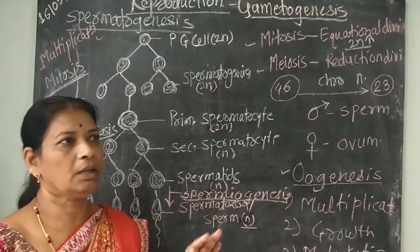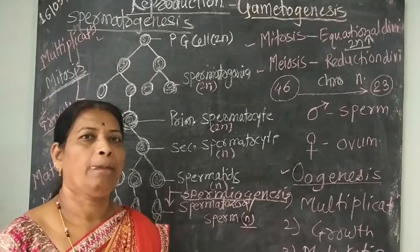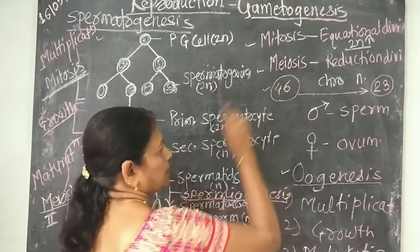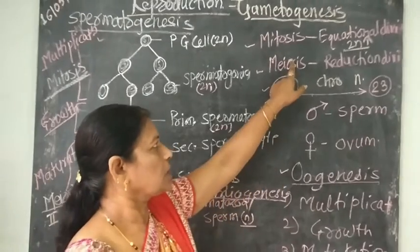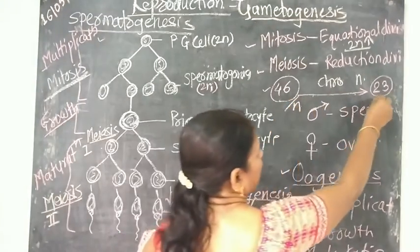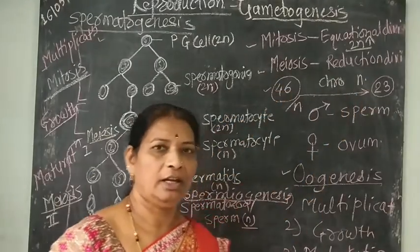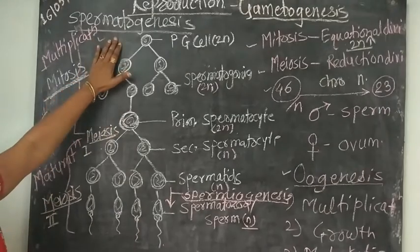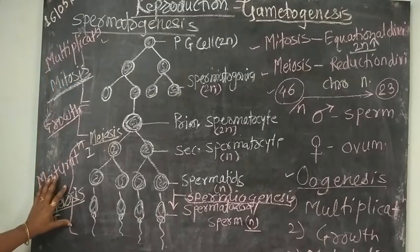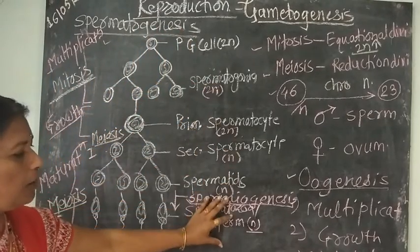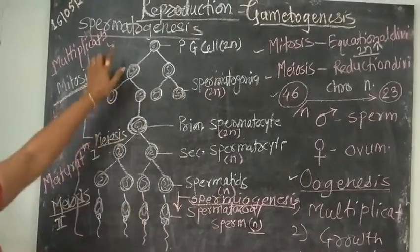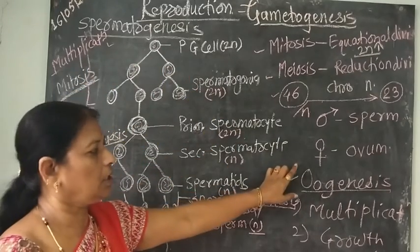Mitosis is the equational division and meiosis is the reductional division. In mitosis the chromosome number remains the same — that means the two sets of chromosomes. For example, in human beings the total number of chromosomes is 46. During meiosis this number is reduced to half, that means it remains 23. So meiosis is known as the reductional division. During spermatogenesis the sperms are formed by both mitosis and meiosis, converting diploid cells to haploid.